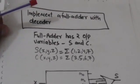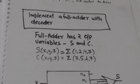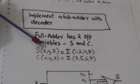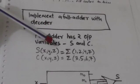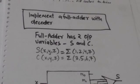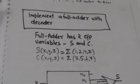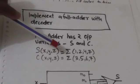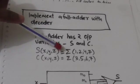Now let's see how we can implement a full adder with a decoder. A full adder has two output variables: S and C. S represents the sum bit and C represents the carry bit. Here X, Y, and Z are the binary variables involved in the boolean functions S and C.